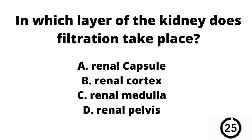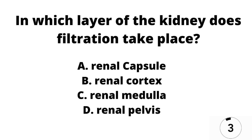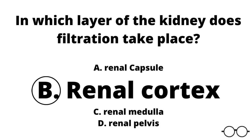Question number eight. In which layer of the kidney does filtration take place? A the renal capsule, B the renal cortex, C the renal medulla, or D the renal pelvis? Our answer here is B — the renal cortex, because remember the glomerulus and the nephron is actually within the renal cortex.